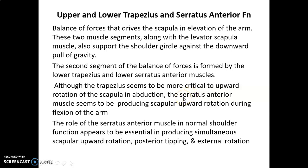Continuing the integration functions of the shoulder complex, the role of the serratus anterior muscle in normal shoulder function appears to be essential in producing simultaneous scapular upward rotation, posterior tipping, and external rotation. The serratus anterior muscle plays the major role in producing scapular upward rotation along with posterior tipping and external rotation of the scapula.